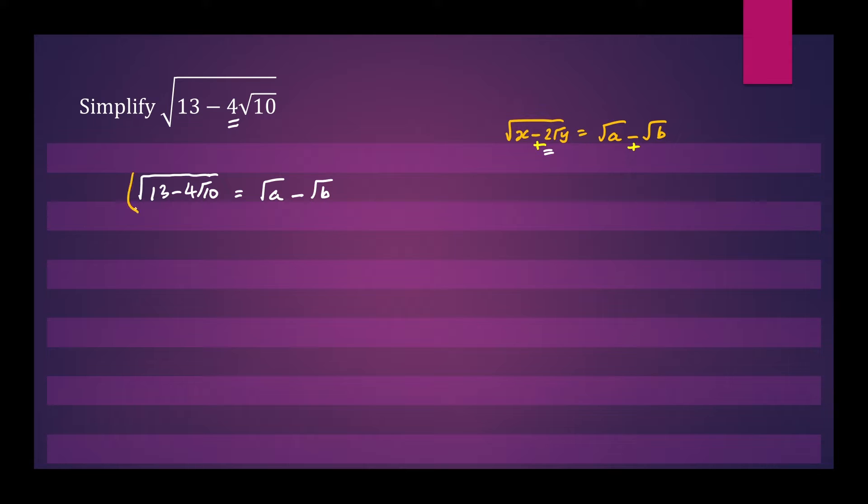We will square both sides and that square will cancel the square root. So we'll have 13 minus 4 root 10 equals root a minus root b all squared.